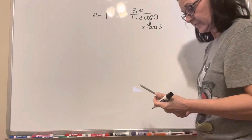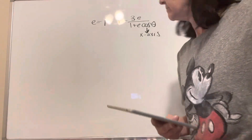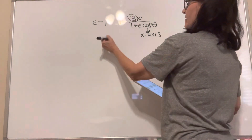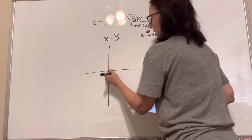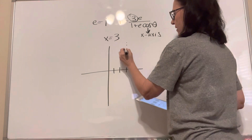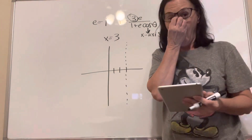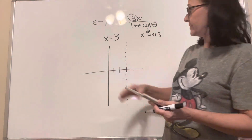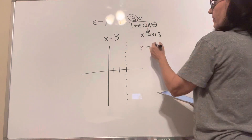I know my vertex — one vertex, because it's a parabola. I know my directrix is going to be here at x equals 3. So because I'm graphing the parabola, that's where my directrix is. It's going to open to the left. We'll plug in 1 for the value of E.